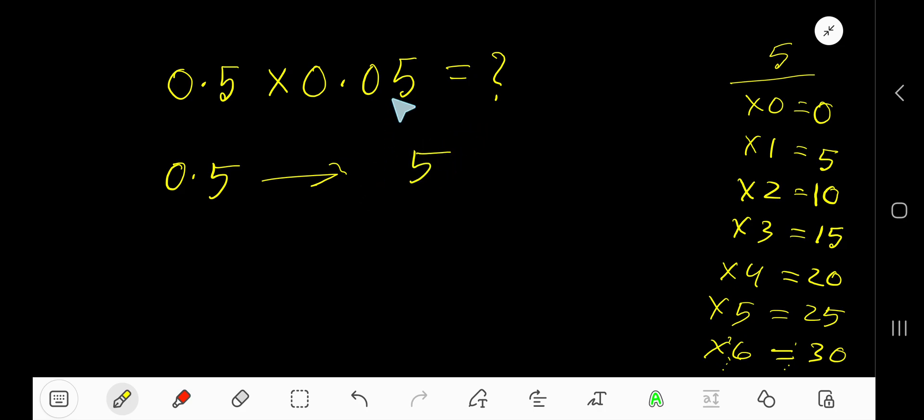5 from this factor. We also need to write the number ignoring decimals. We are getting 0.05, which means 5. These two zeros don't have any value. Now multiply these two numbers together: 5 times 5 equals what?